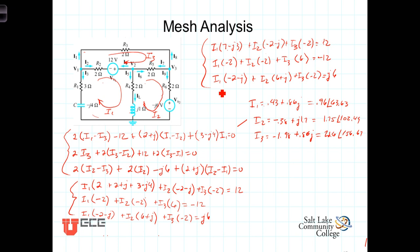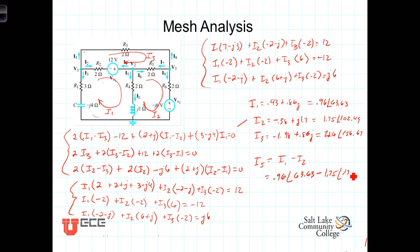Just to compare with what we did before in the node analysis: we calculated the current going down the vertical middle branch, called I5. In this case, I5 simply equals I1 minus I2, which turns out to be 0.96 angle 63.63 minus 1.75 angle 102.49, giving a solution of 1.17 angle negative 46.41 degrees. When you compare that to the solution from node analysis you'll see that they're exactly the same.